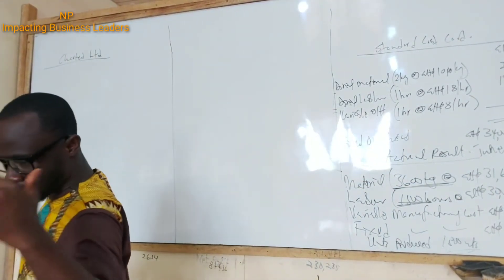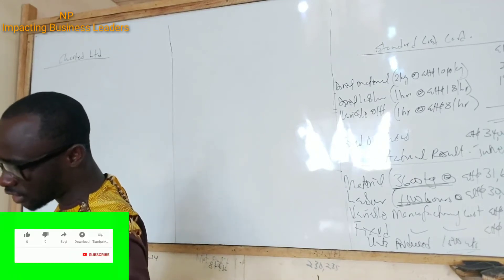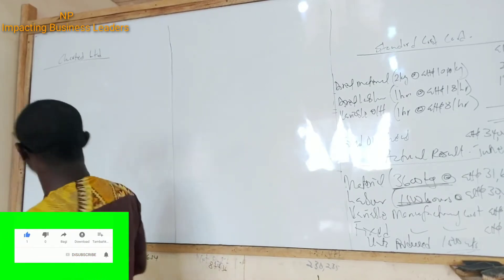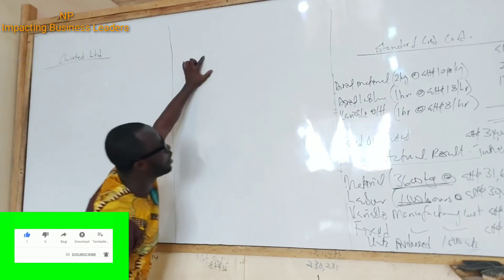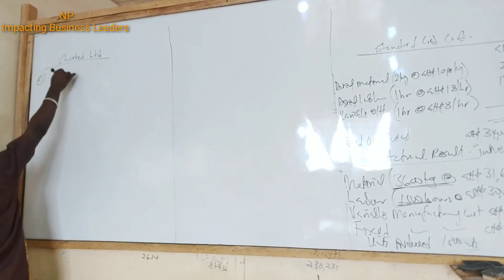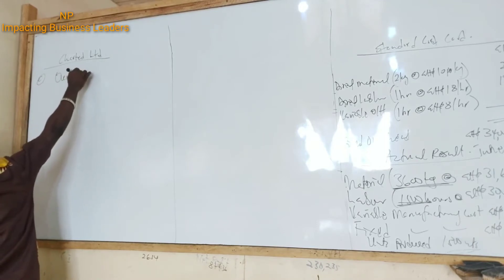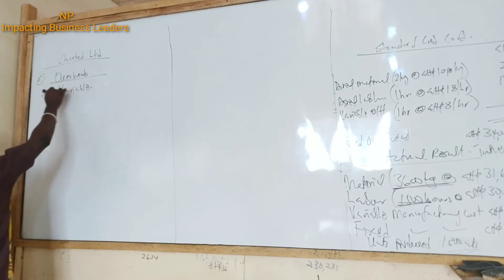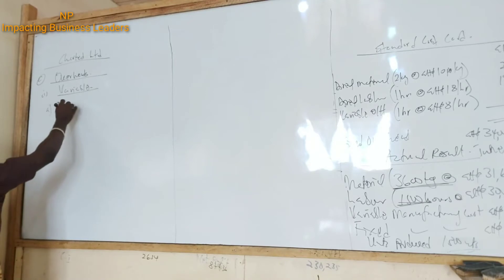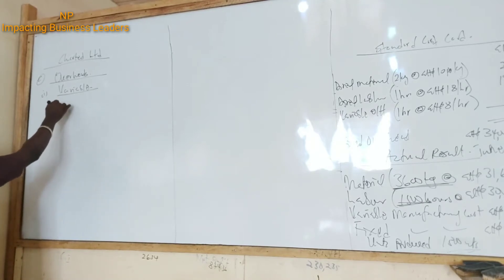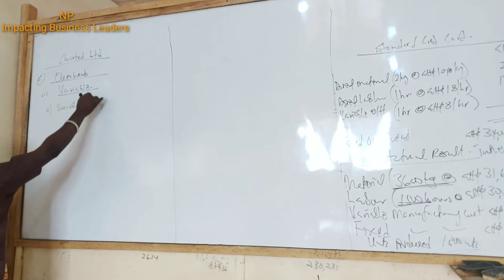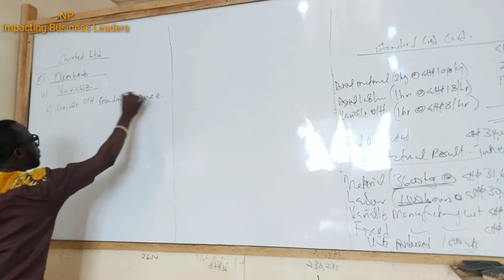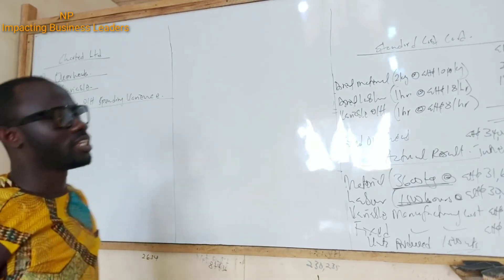Let's figure it out. Variable overhead spending — which is the same as expenditure variance — and then the efficiency variance. So A was material, B was labor, and C would be overheads. Under overheads we have variable, and under variable we have the variable overheads spending variance.